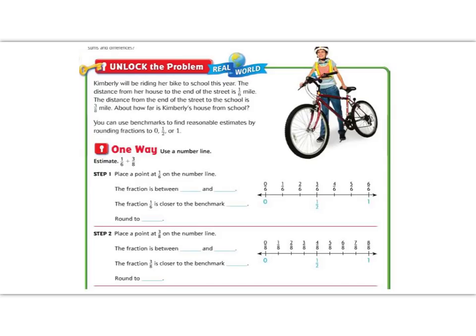Let's begin our jump into fractions by reading the Unlock the Problem. It says, Kimberly will be riding her bike to school this year. The distance from her house to the end of the street is 1/6 mile. The distance from the end of the street to the school is about 3/8 of a mile. About how far is Kimberly from school? Let's underline that question — we want to know about how far is Kimberly's house from school.